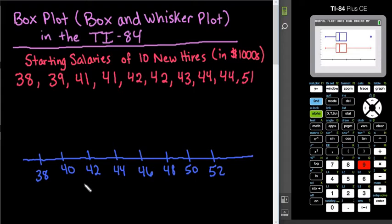So 38 to 52 contains all of our points. And then you always want to include scales down at the bottom. So this would be starting salaries.